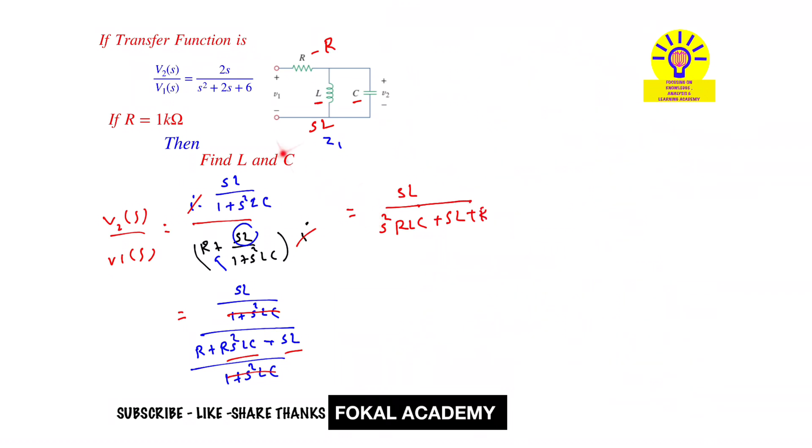Now compare with the given transfer function. Here s² coefficient is 1, so make here s² coefficient 1. For that divide with RLC. Here s² it becomes, let's take in numerator and denominator, it becomes sL/(RLC), that is s/(RC), upon s² + s(1/RC) + 1/(LC). L cancels. So s/(RC) is there. Now compare this equation with the given transfer function. You can see here s² coefficient. Now compare this equation with the given transfer function. 1/(RC) is equal to 2.